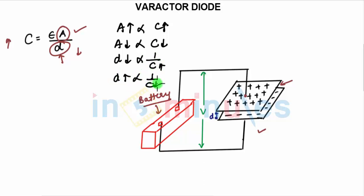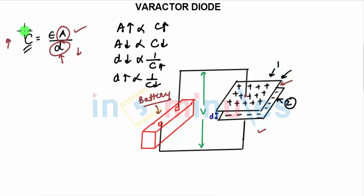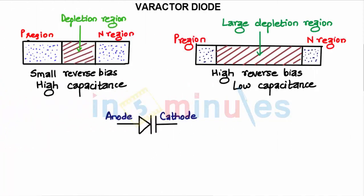If area is large, capacitance is large; if area is small, capacitance is small — they are directly proportional. Distance is inversely proportional: smaller distance gives higher capacitance, larger distance gives lower capacitance. Considering two plates with distance d, as you vary the voltage and change the distance between the plates, the capacitance will change. When a diode is reverse biased, there is no current flowing through the P and N regions.